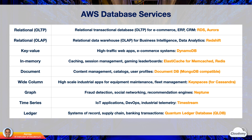Amazon Quantum Ledger Database, QLDB, is a fully managed ledger database that provides a transparent, immutable, and cryptographically verifiable transaction log owned by a central trusted authority. QLDB uses cryptographic algorithms similar to blockchain-based ledgers such as Hyperledger Fabric and Ethereum. However, the difference is that blockchain frameworks rely on an entire network with multiple nodes, whereas QLDB is centralized and easier to set up. Use cases are applications that require transparent, traceable, and immutable transactions, such as supply chain and banking transactions.